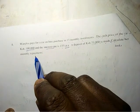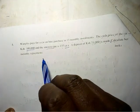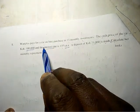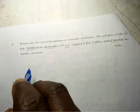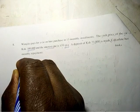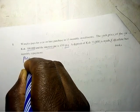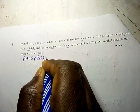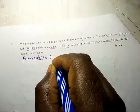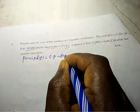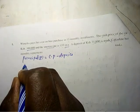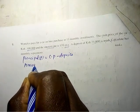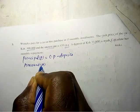When hire purchase has been included with the interest rate, there are things you need to know. The principal P is equal to cash price minus deposit. So amount A is equal to hire purchase minus deposit.